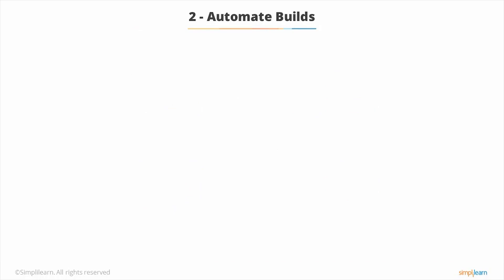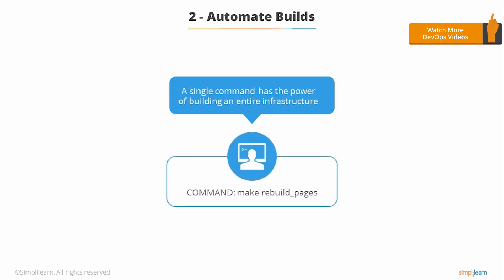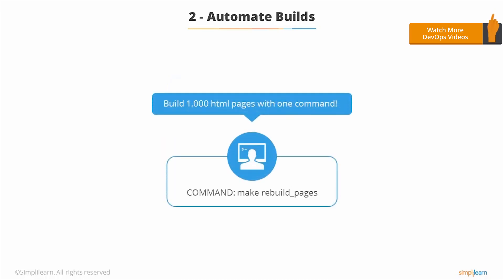The next principle is automate builds. This means that a single command should have the power to build an entire infrastructure. For example, an entire section of a website can be rebuilt by running a single command such as 'make rebuild-pages'. The key takeaway is that a single command should have the power to build an entire infrastructure.